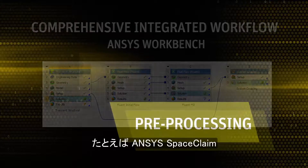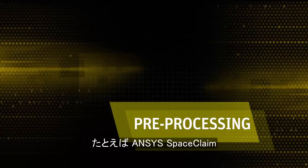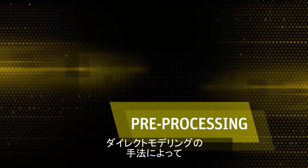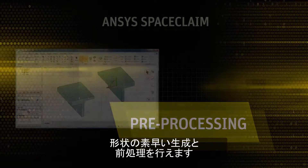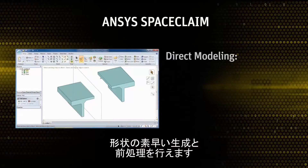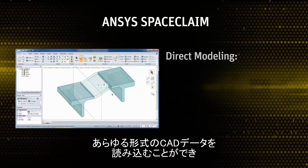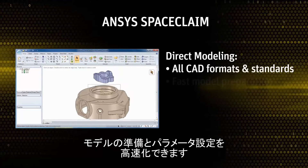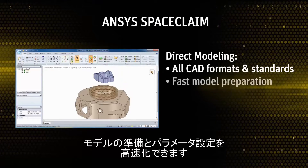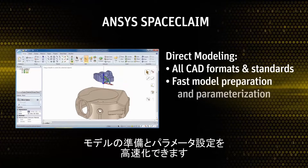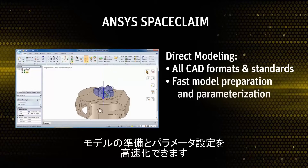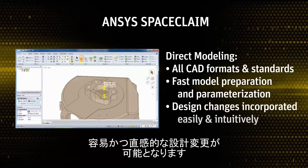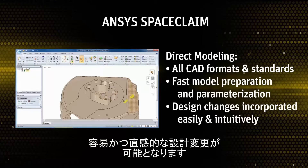ANSYS SpaceClaim can be used for rapid geometry generation and pre-processing via direct modeling. SpaceClaim can import all CAD formats and can aid in fast model preparation and parameterization. Design changes can be incorporated easily and intuitively.